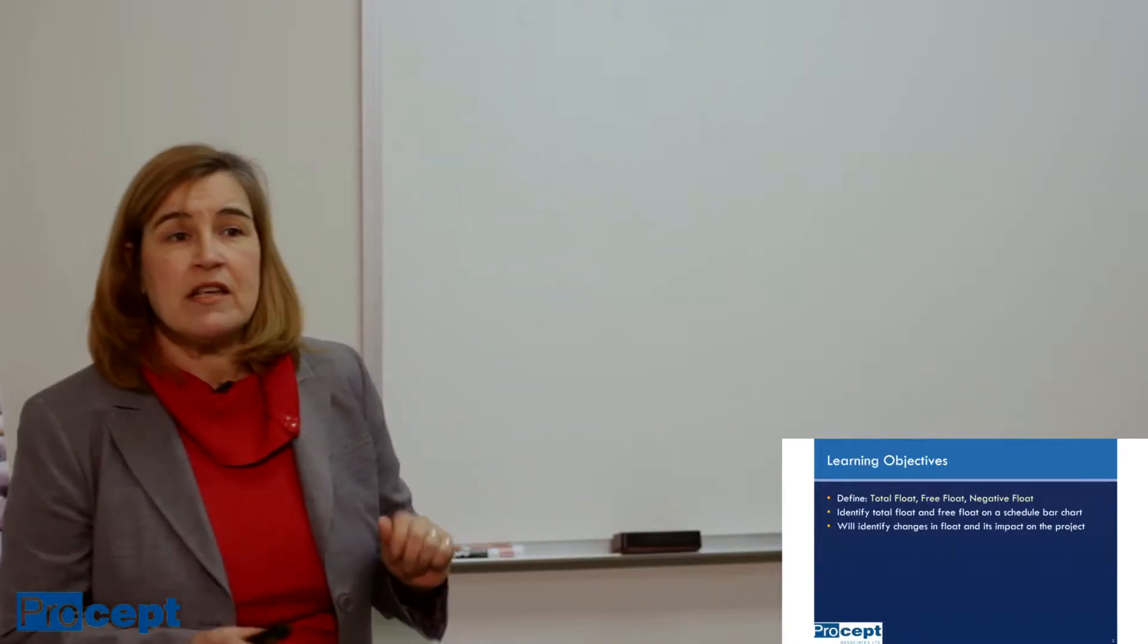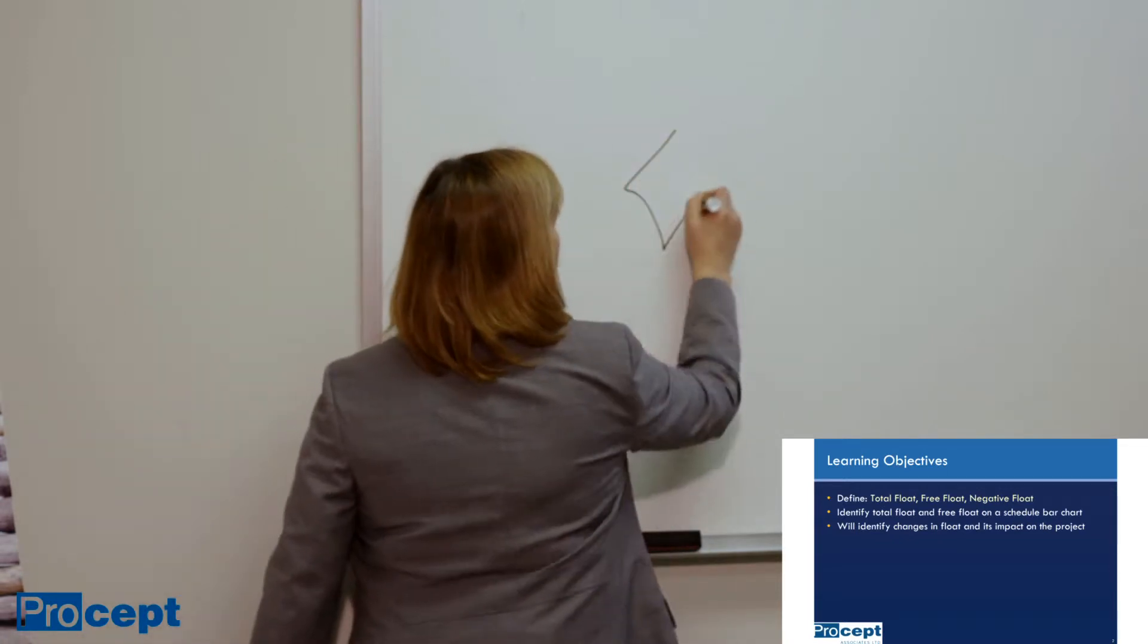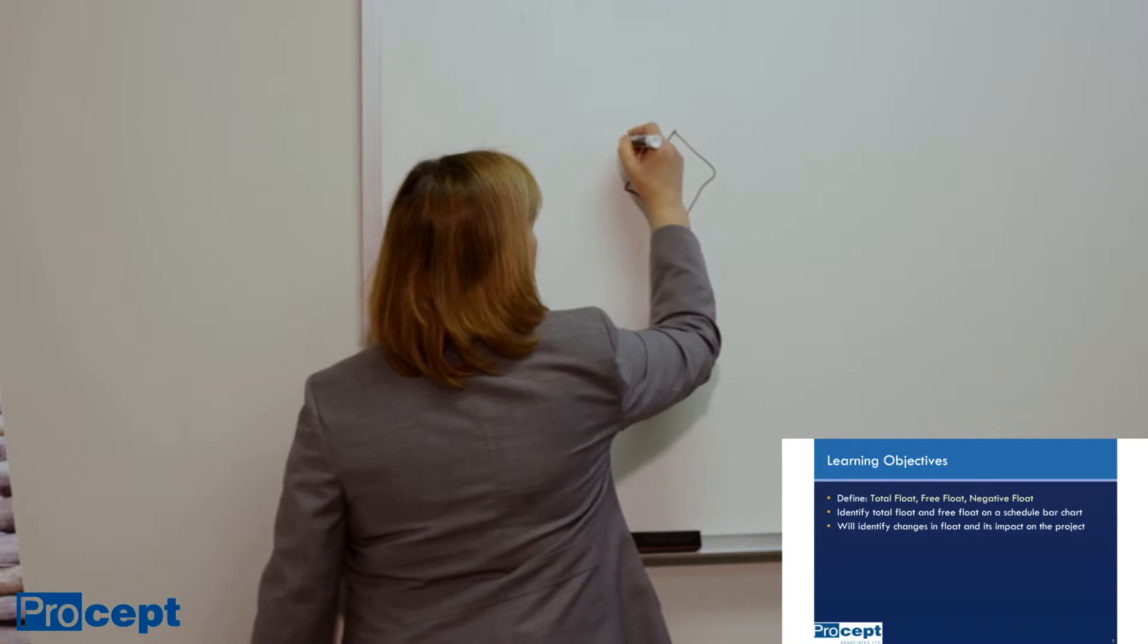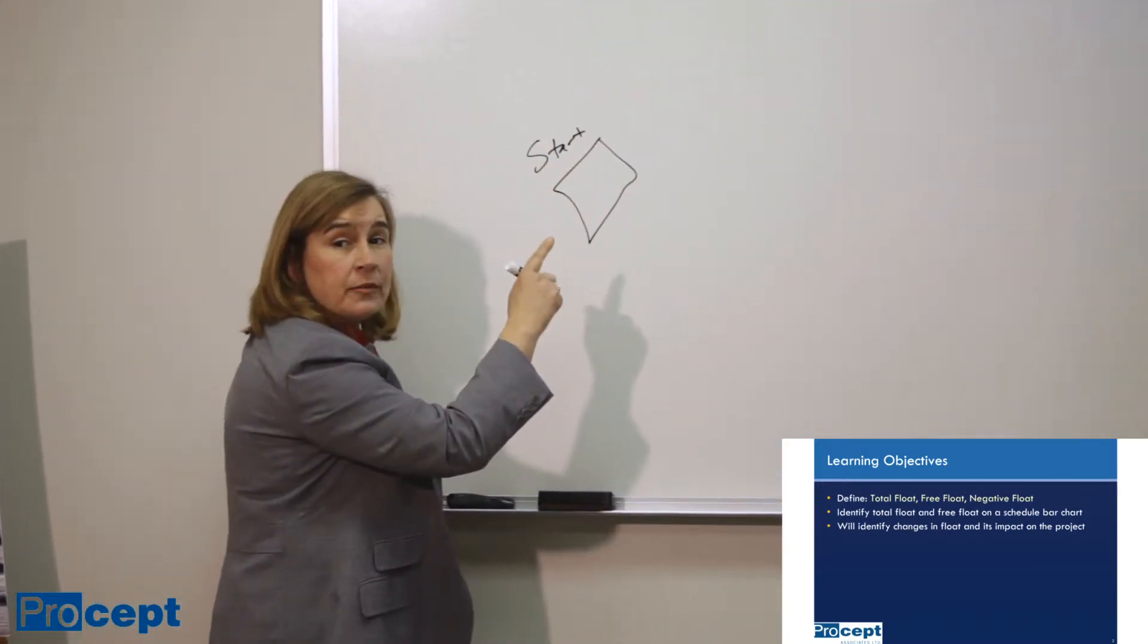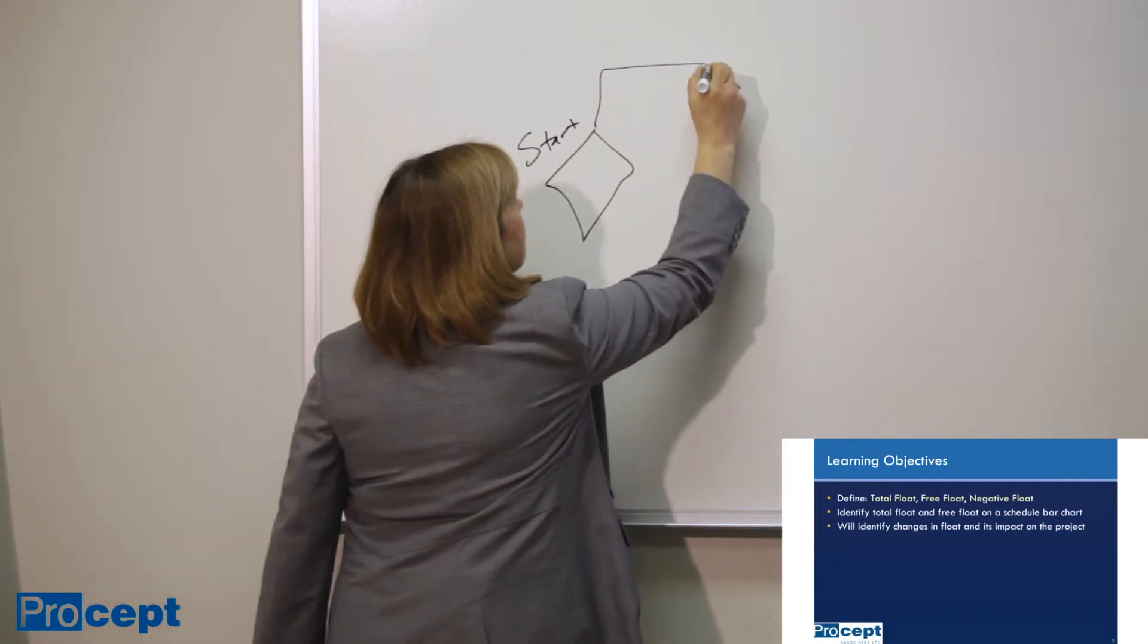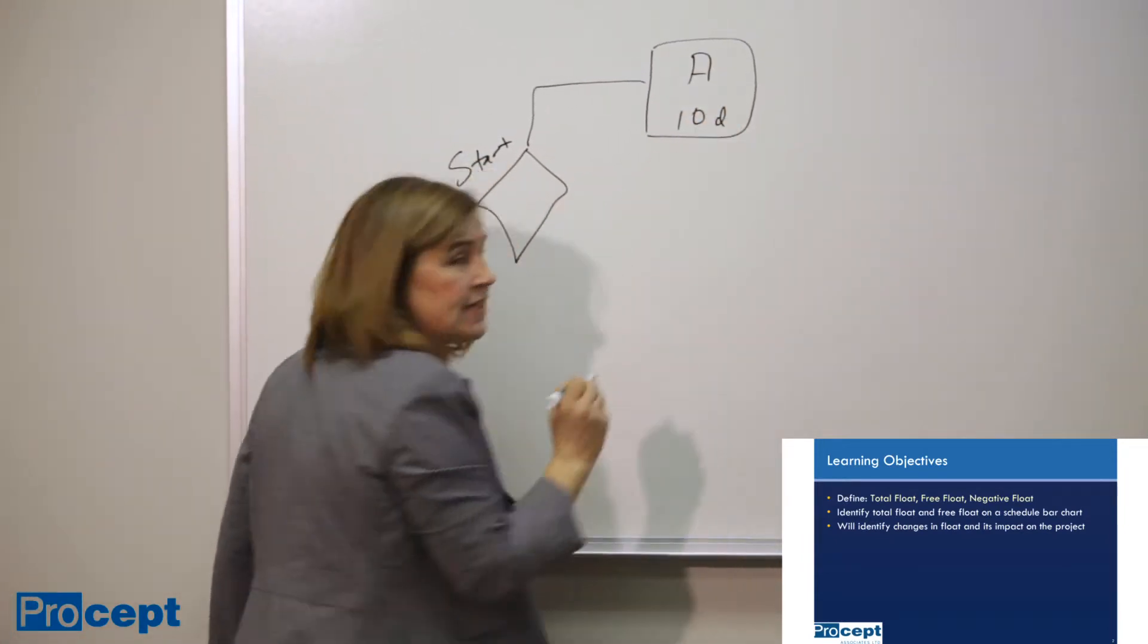So what is float? Let's understand it through a simple example. If we have a start point here, it's a milestone, start milestone, and from that start milestone, once we start the project, we have an activity called A, and that activity is 10 days long.